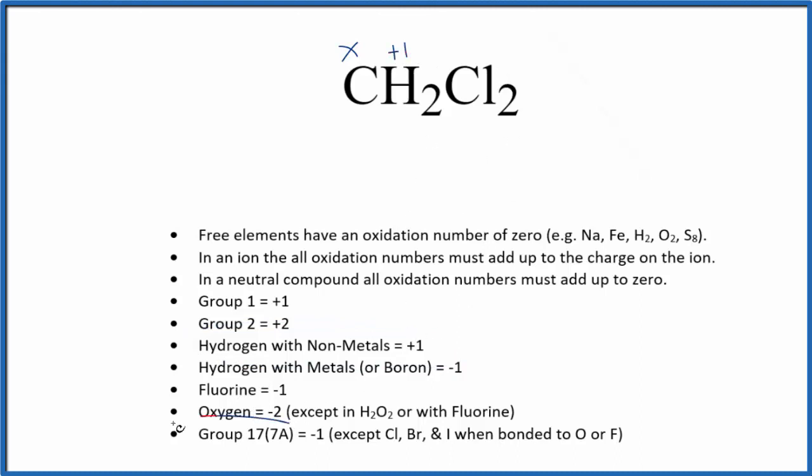And then chlorine is in group 17, sometimes called 7A. That's negative one with a few exceptions. So here it's going to be negative one on each one of those chlorine atoms.